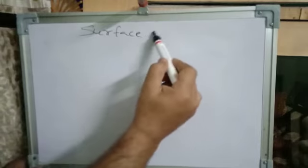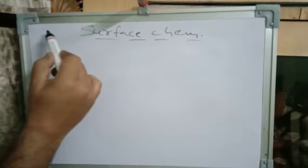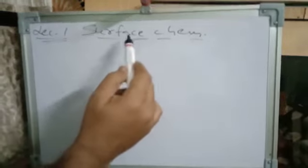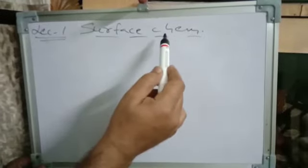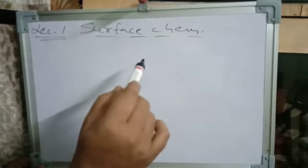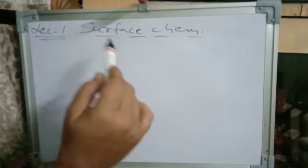Surface Chemistry. This is Lecture 1. Surface Chemistry — as the name suggests, Surface Chemistry means Surface Phenomena. That is, phenomena taking place at the surface only. We have already studied Surface Phenomena in Class 11.